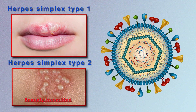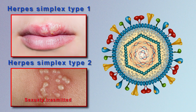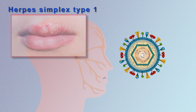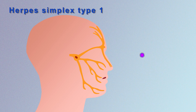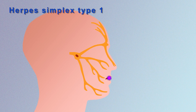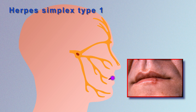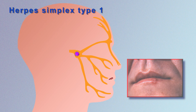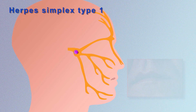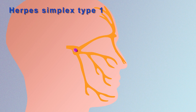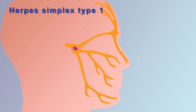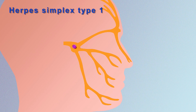The first virus, herpes simplex type 1, infects us through the lips. After the initial infection it causes a wound around the lip, and then the virus travels via the nerve system to the ganglia, where the virus becomes latent — non-active — for many, many years without causing any problem.